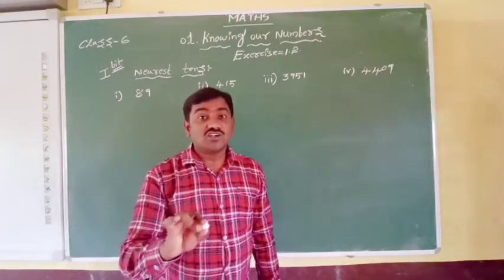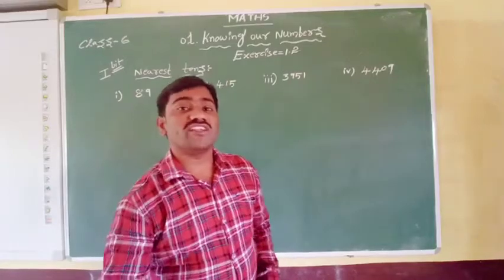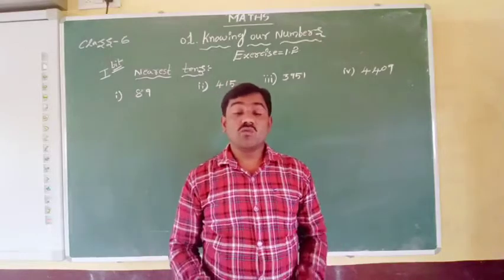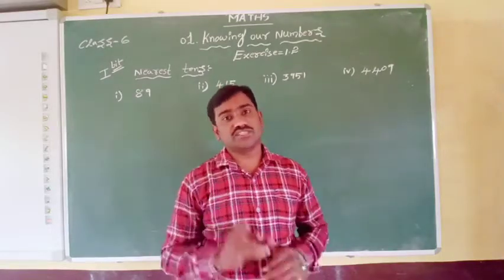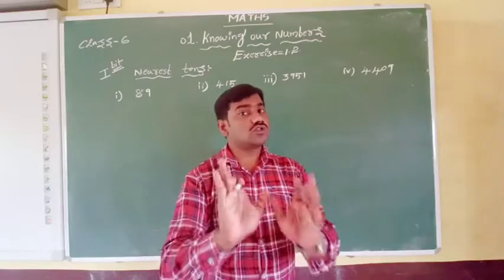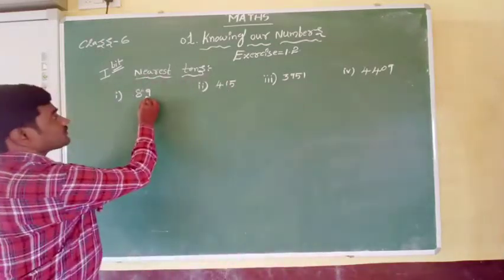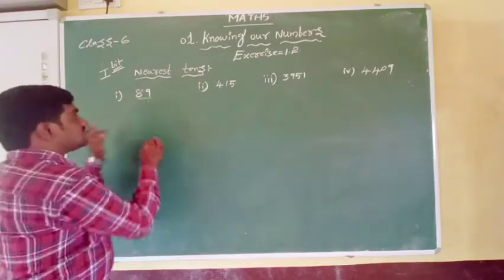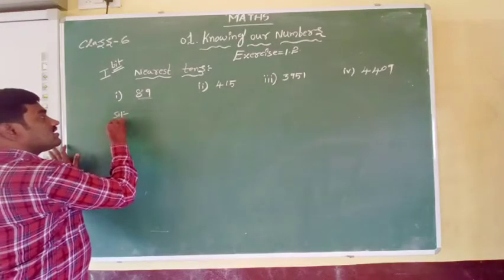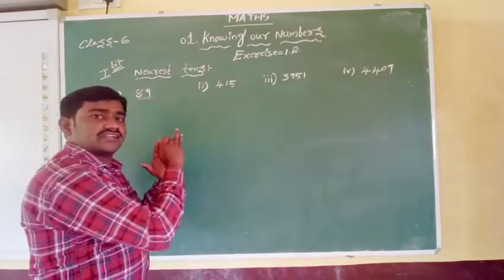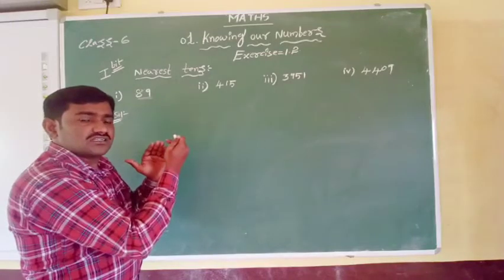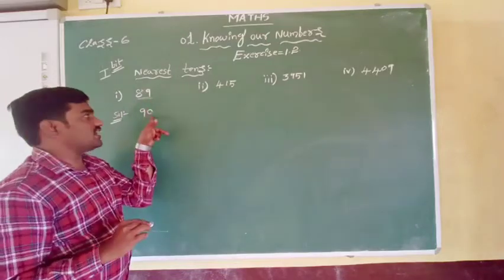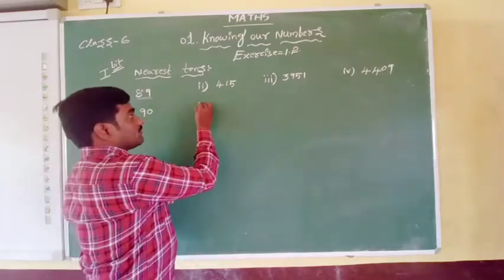For nearest to 10s, we need to observe only the 10s place numbers — we should not look at the 100s or 1000s place. Now, 89: is 89 near to 90 or 80? 89 is very near to 90. So the nearest 10 to 89 is 90.